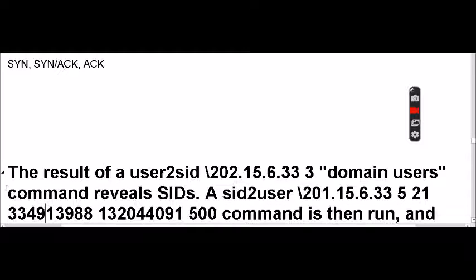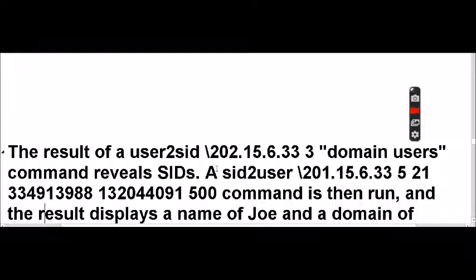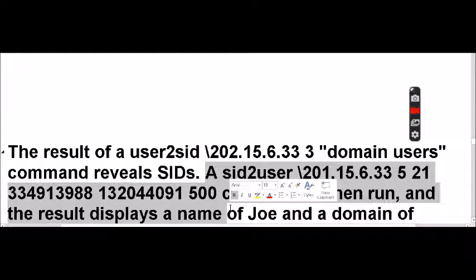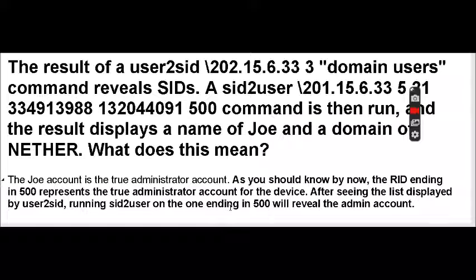The result of the user SID reveals a specific value. What does that mean? It means the true administrator was identified. As you know, the RID ending in 500 represents the true administrator account for a device, as seen in the displayed list.